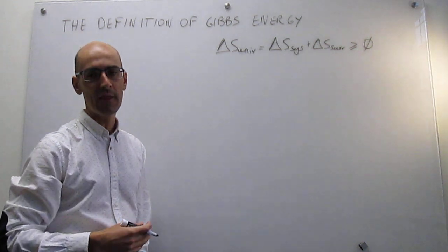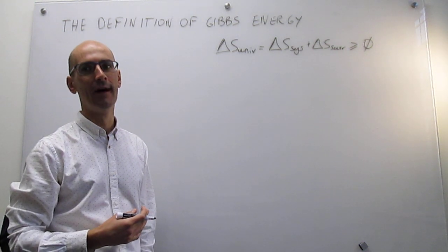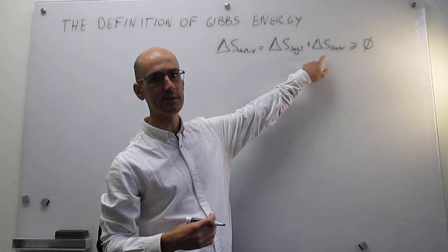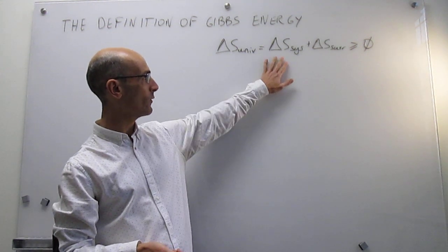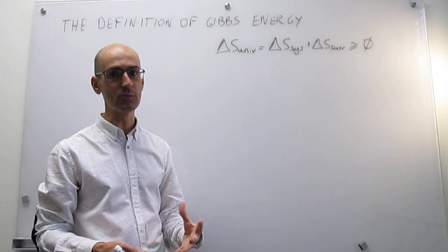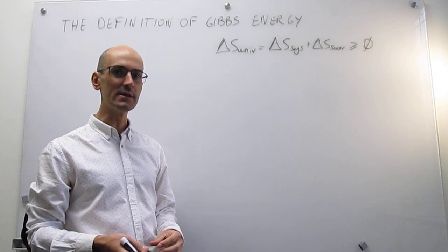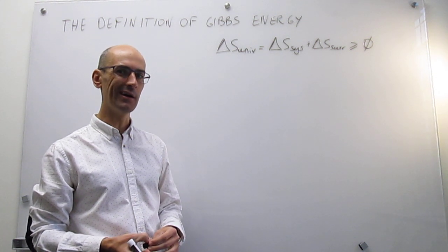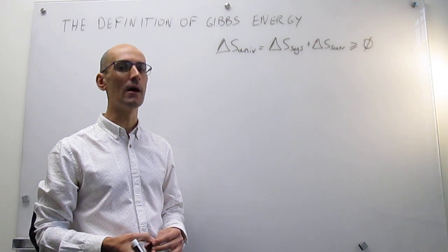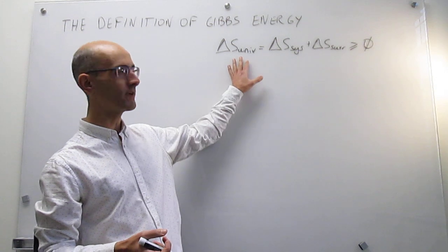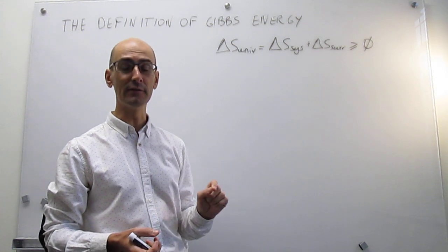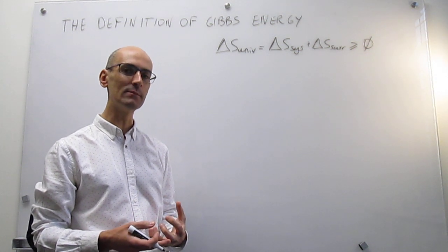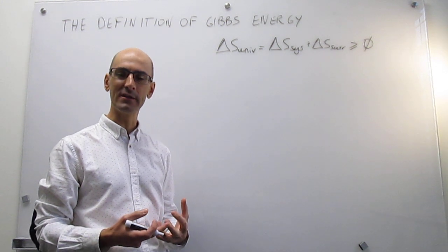The statement of the second law — calculating the change in entropy of the universe — can sometimes be cumbersome because you have to handle the surroundings. While we know quite well how to calculate the change in entropy in the system, which is what we control, the surroundings can be difficult to calculate. So it would be very useful to have a criterion for spontaneity that does not involve the surroundings and only involves the system.